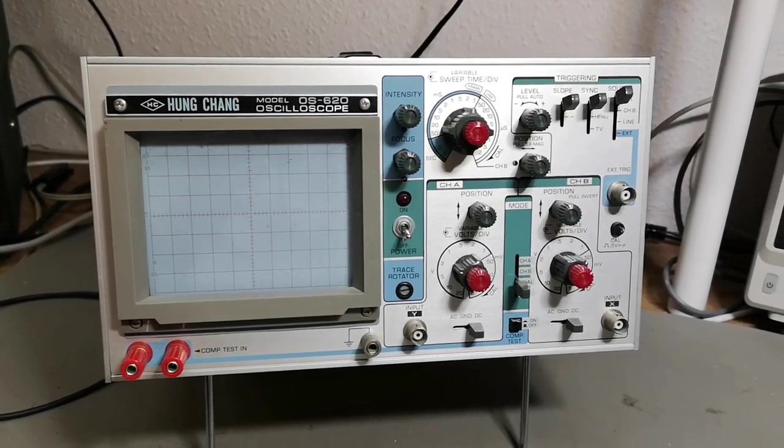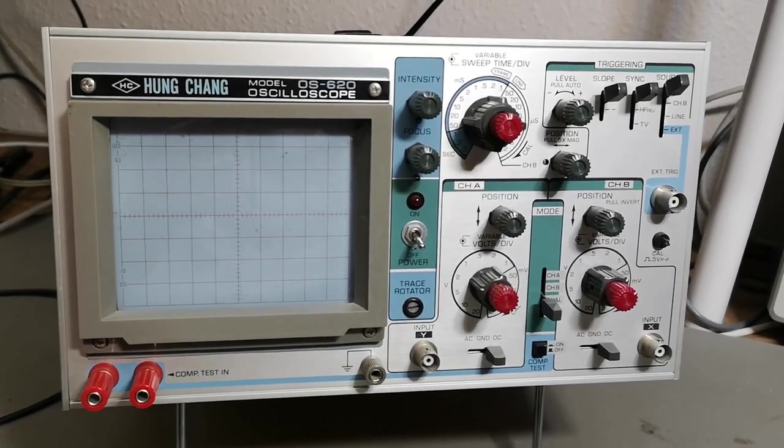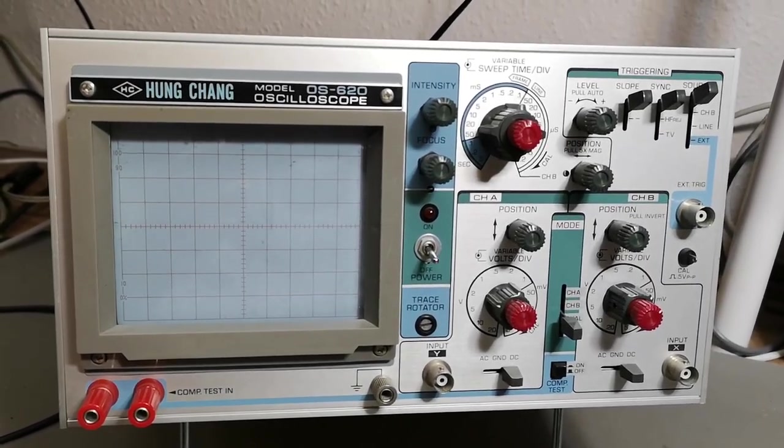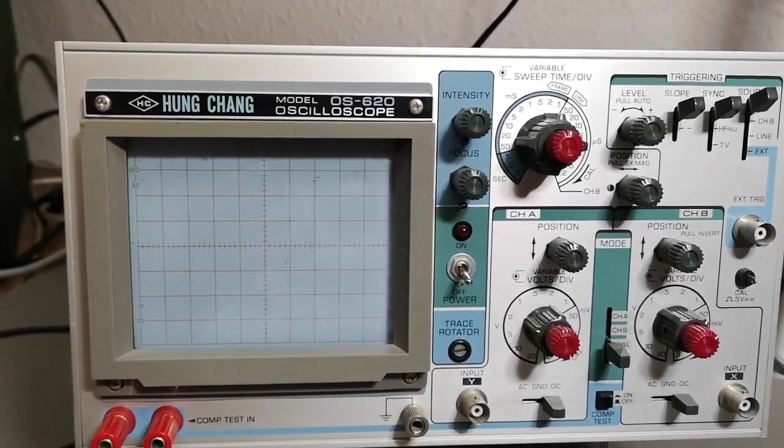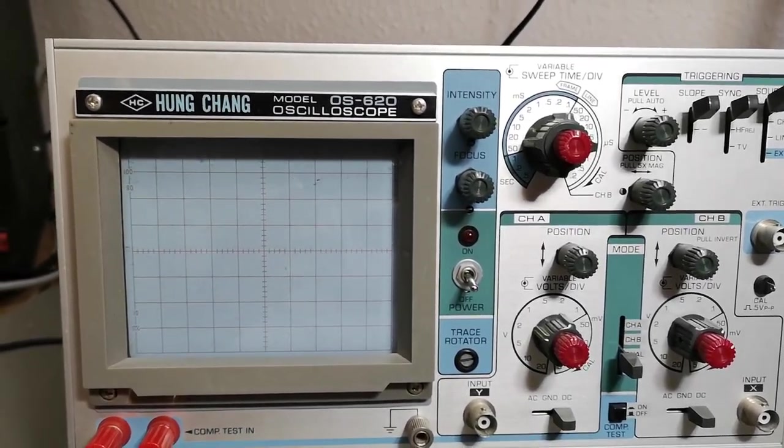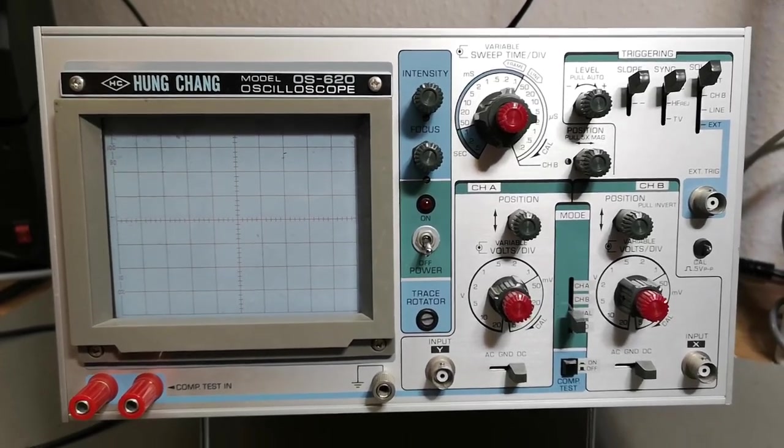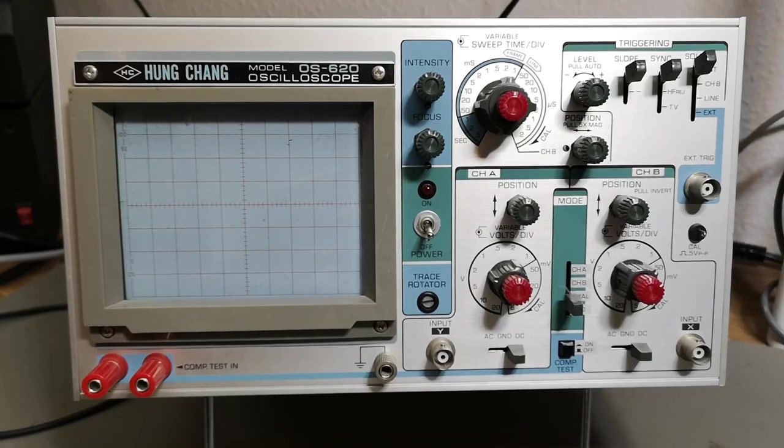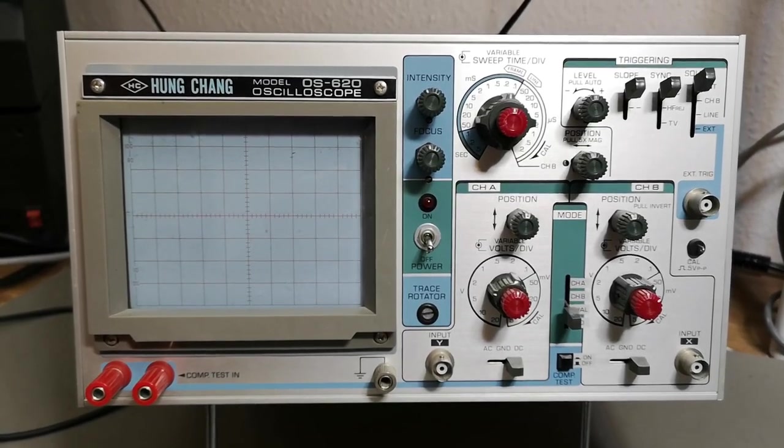Welcome to a new test and teardown video, another oscilloscope. This one is a Hung Chang model OS-620, two channels, 20 megahertz, and it's quite modern for its age. This one is from about 1985.